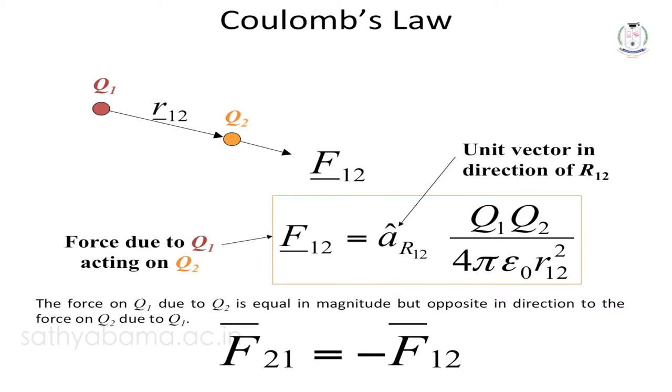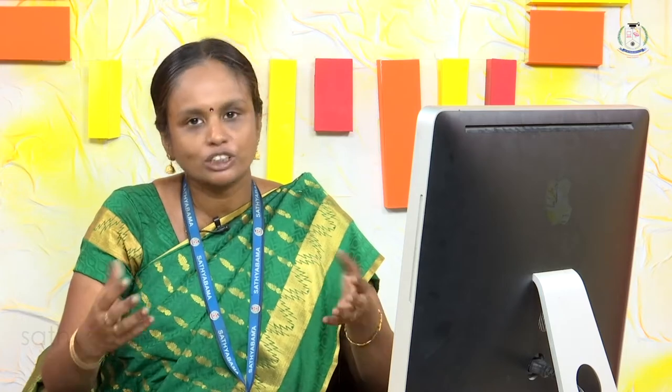Considering two charges Q1 and Q2 with distance R12 between them, we have two force conditions: F12 is the force due to Q1 acting on Q2, and F21 is the force due to Q2 acting on Q1. F12 equals minus F21 according to the equation. Same-type charges produce repulsive force; opposite charges produce attractive force.